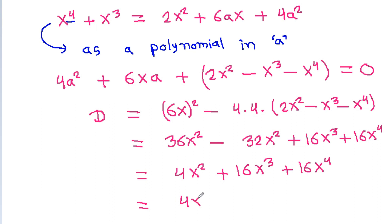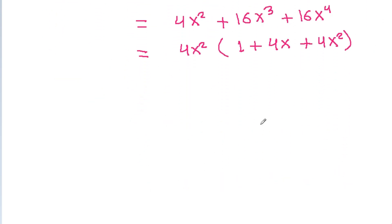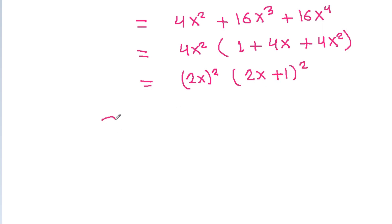And 36 minus 32 will be 4x² + 16x³ + 16x⁴. We can take 4x² common, and we will get 1 + 4x + 4x². So 4x² is (2x)² and 1 + 4x + 4x² is (2x+1)². Therefore D = 4x²(2x+1)².